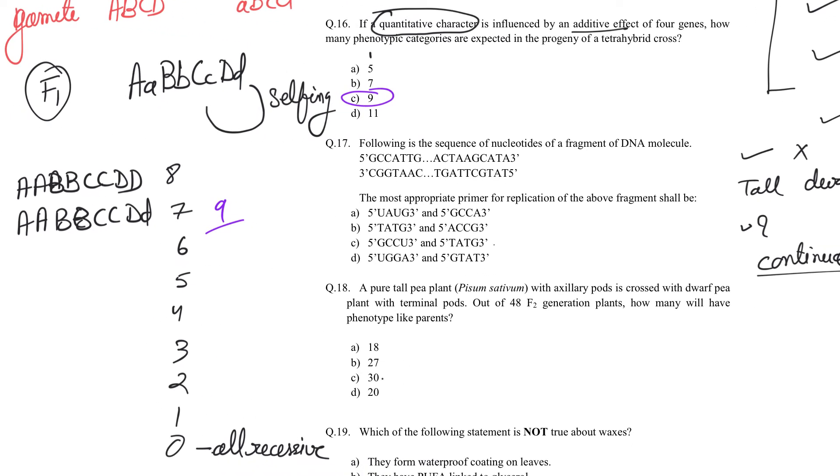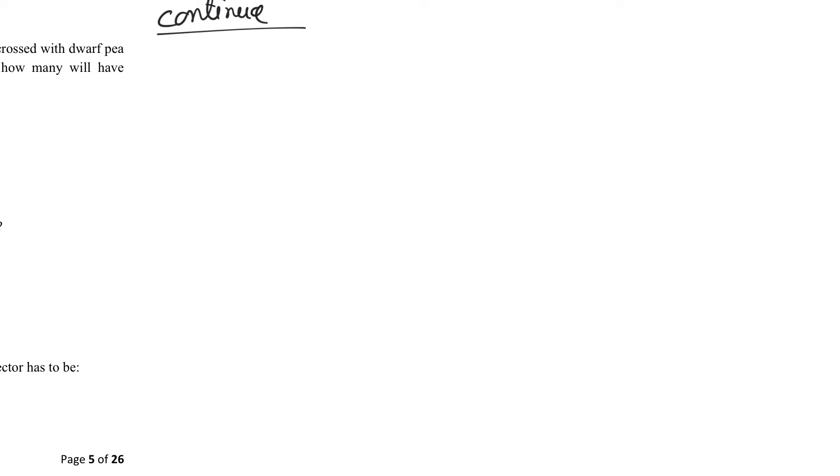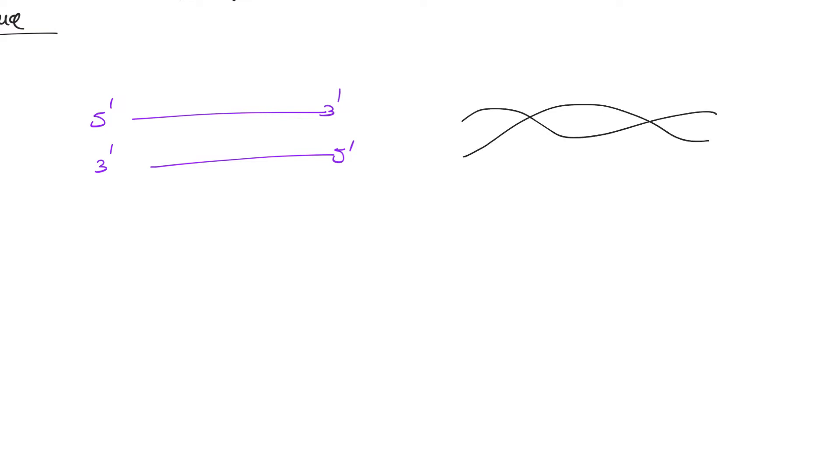Question 17 is easy: following the sequence of nucleotides of a DNA fragment, find the appropriate primer. Let me remind you what primer is. DNA is five prime to three prime or three prime to five prime. DNA is double stranded, made of deoxyribonucleotides. If this is your deoxyribose sugar, the fifth carbon has phosphate attached, third carbon has OH attached. That's why you have a five prime end and a three prime end.